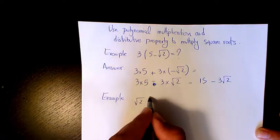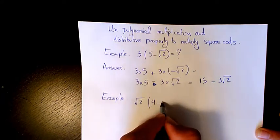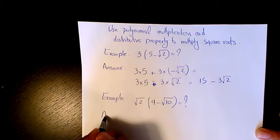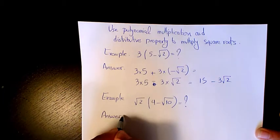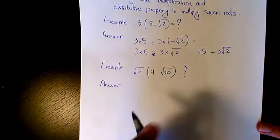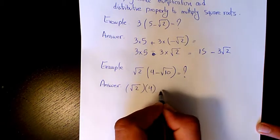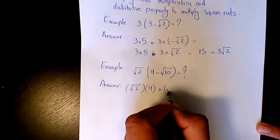Next example we have √2(4 - √10). The answer is √2 times 4 plus √2 times negative √10.